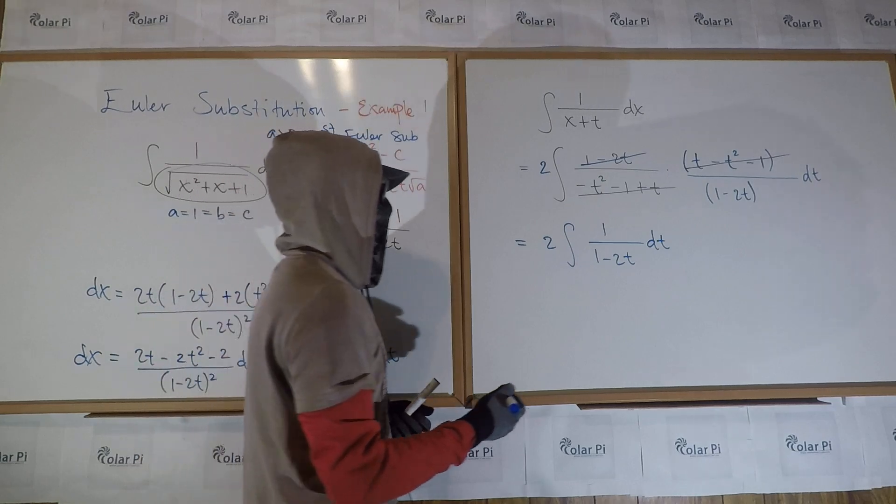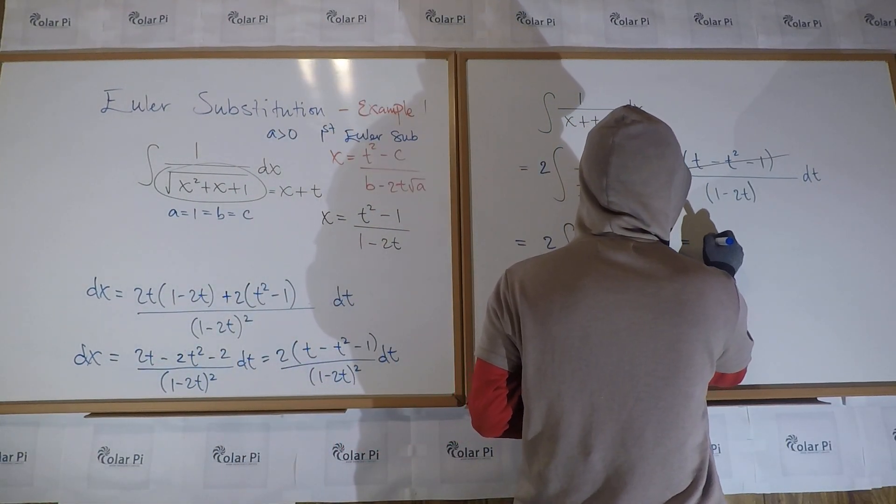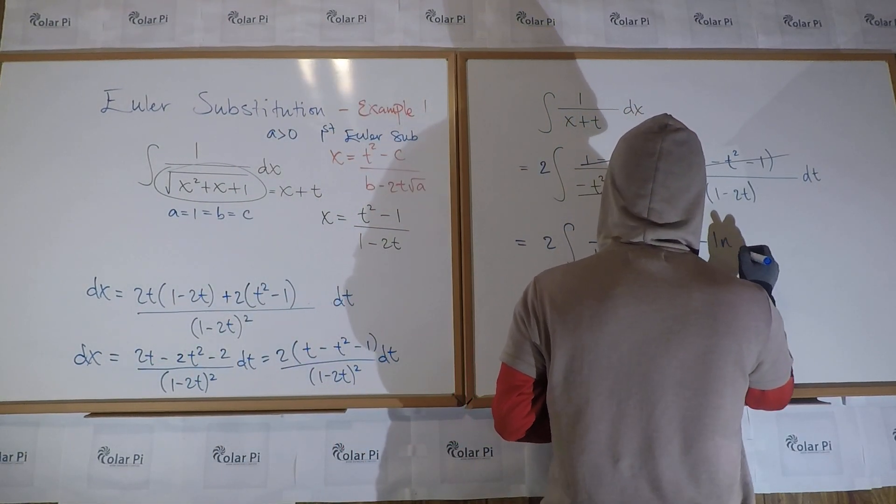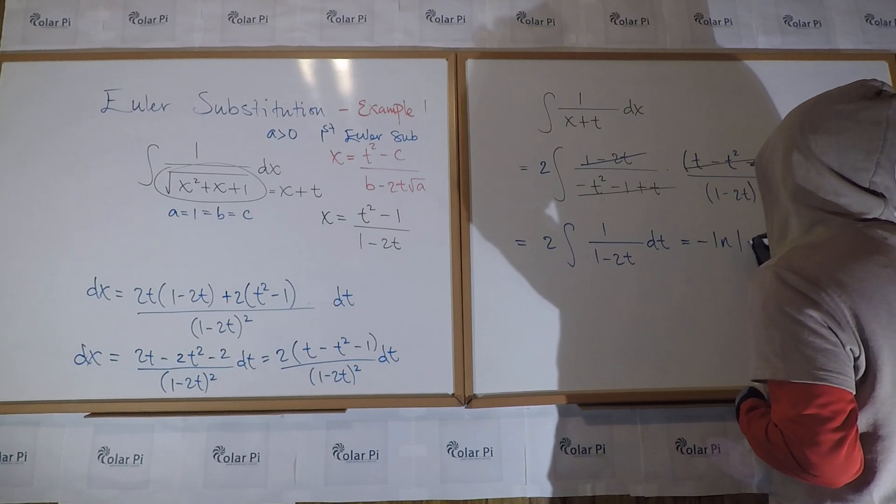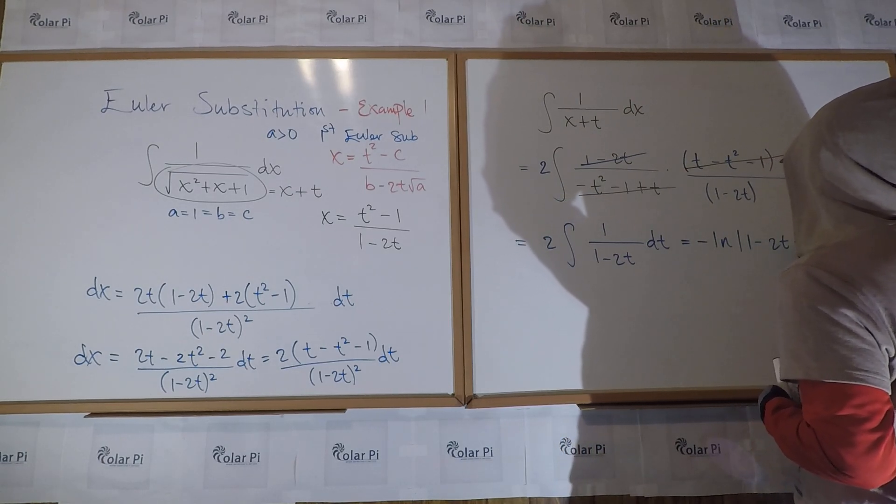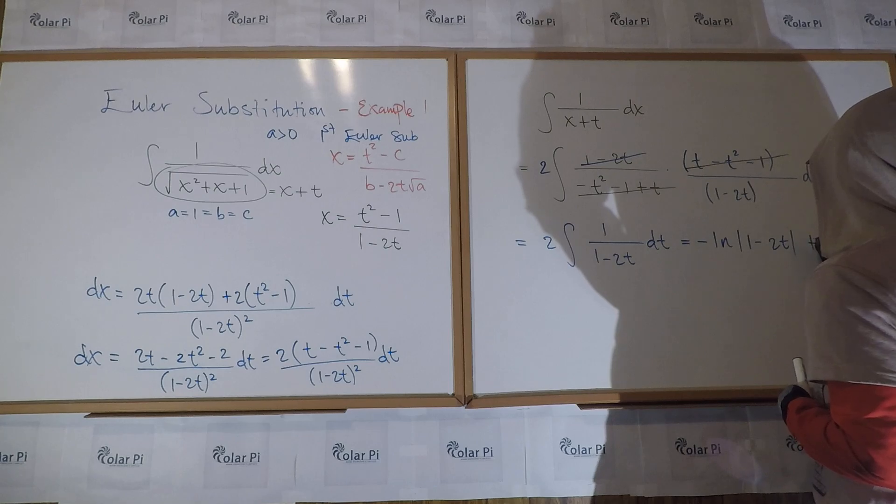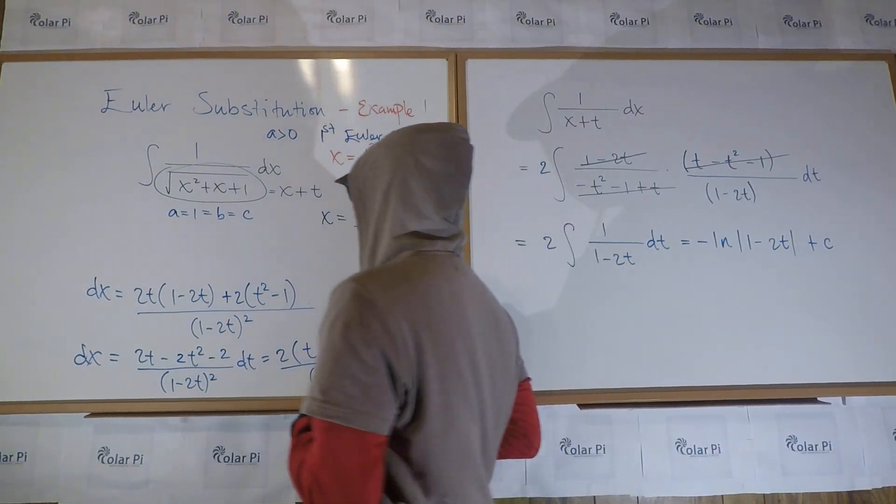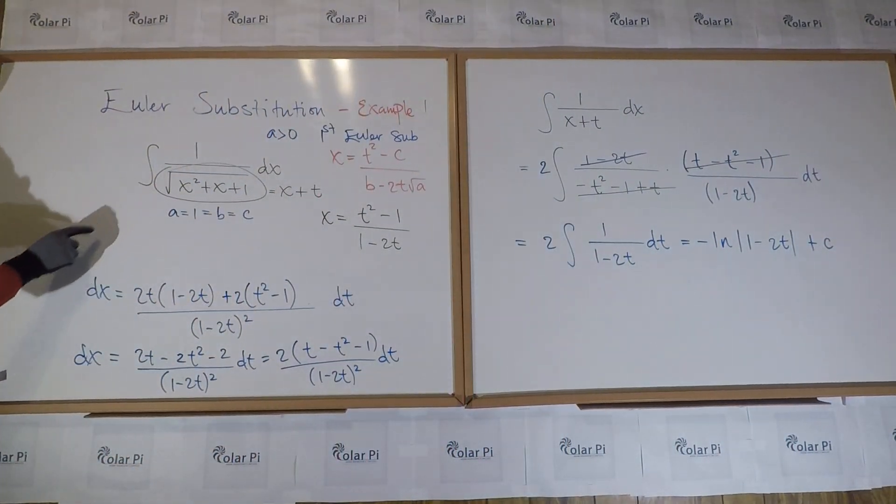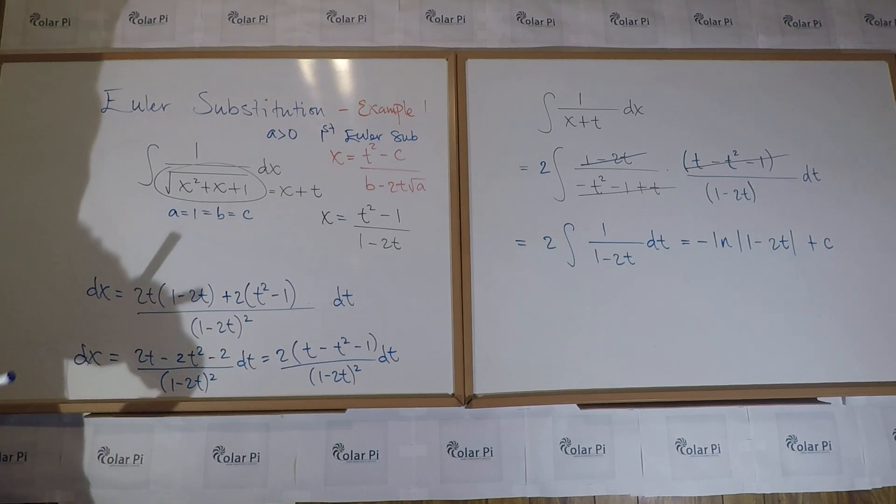Now, I don't know if you'll need to think a little bit more, but this is just the negative of the natural log of one minus two T plus C. Only our integral had an X to start. So how do we get back to that?